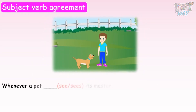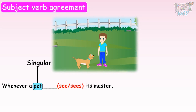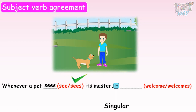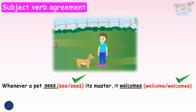Whenever a pet dash its master — see or sees? Pet is a singular noun, so we will use sees. That is, we will put S after the verb. Whenever a pet sees its master, it dash — welcome or welcomes? It is a singular pronoun, so we will use welcomes. That is, we will add S to the verb. It welcomes him by wagging its tail.